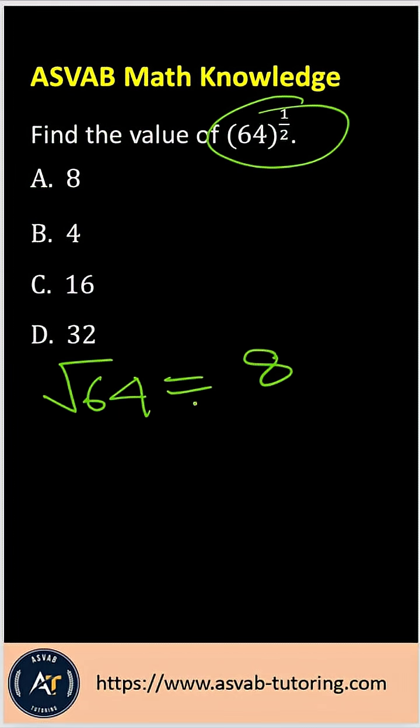But there is another way you could also do it. If you don't have exactly 1 half, you have a different value in the exponent, you could do that.